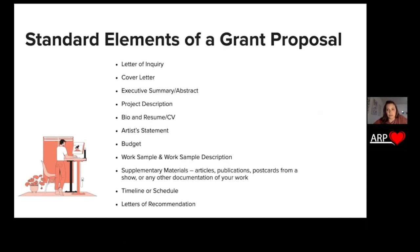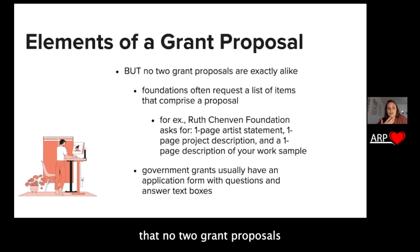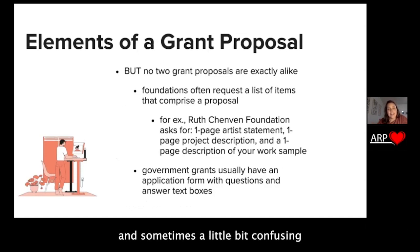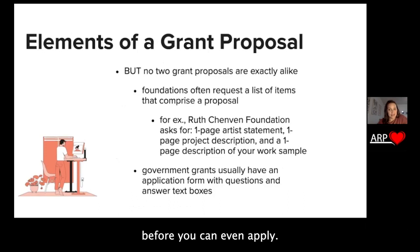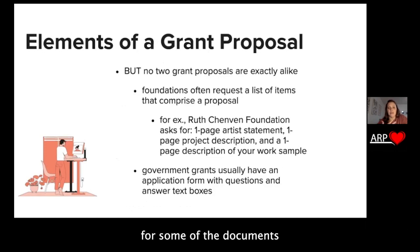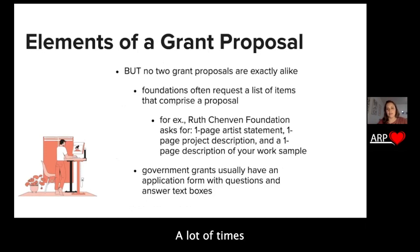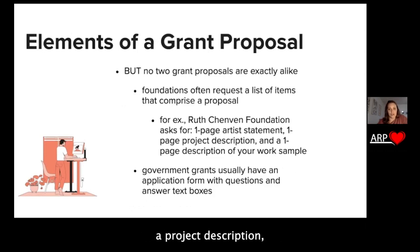It's important to note that no two grant proposals are exactly the same, which is what makes grant writing sometimes a little bit daunting and confusing, because you have to familiarize yourself with each grant before you can even apply — what are they asking you for? Sometimes they'll ask for some of the documents from that standard elements list. For instance, the Ruth Chenvin Foundation will ask for an artist statement, a project description, and a work sample and work sample description — just three of those documents.